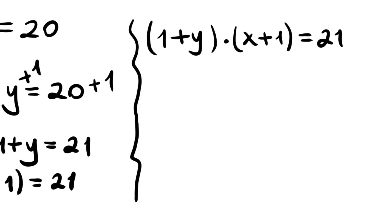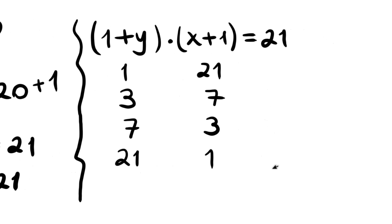So 21 is equal to 1 times 21, 3 times 7, 7 times 3, and 21 times 1.